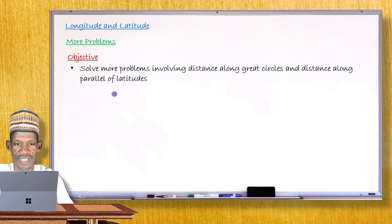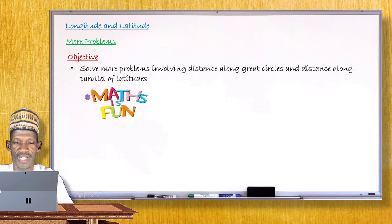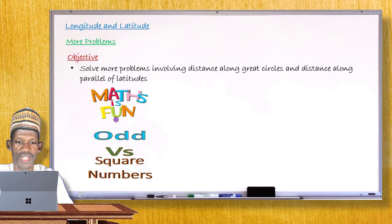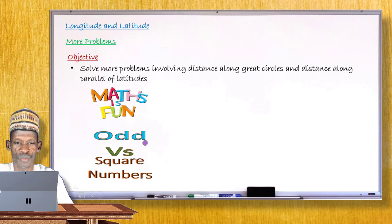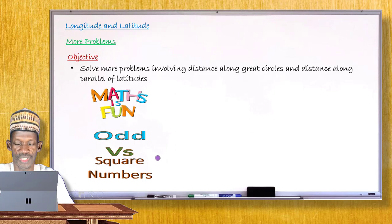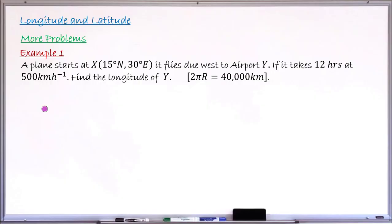As usual, in your favorite segment of the lesson — math is fun — I'm happy to give you another relationship between the sequence of odd numbers and the square numbers. We can generate the square numbers from the sequence of odd numbers, and I'll show you how after the main lesson. So don't go away as we take on more problems.